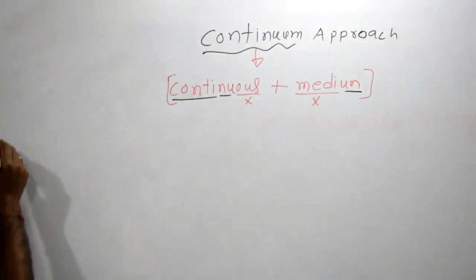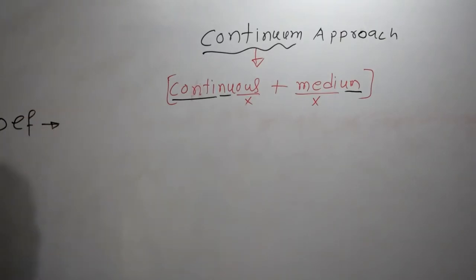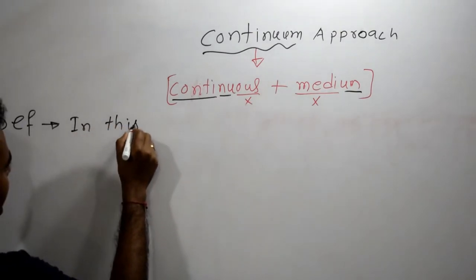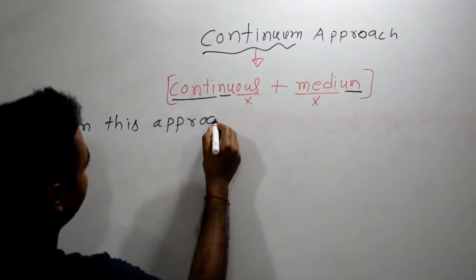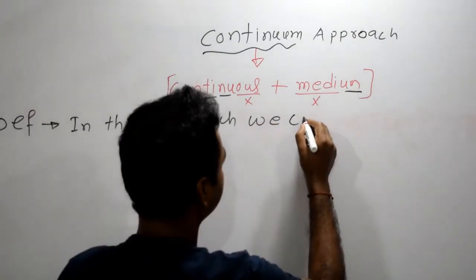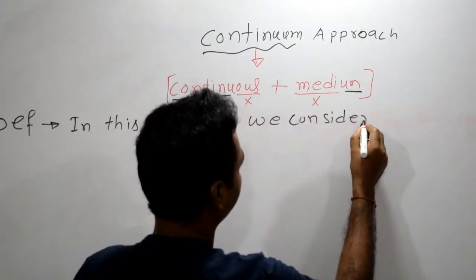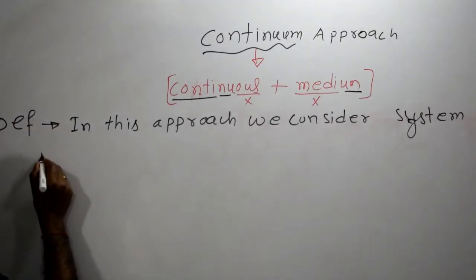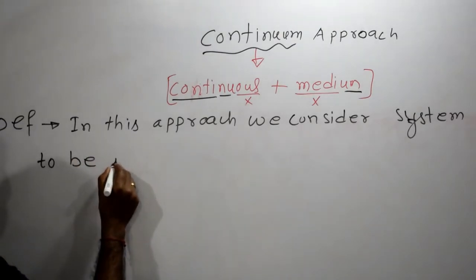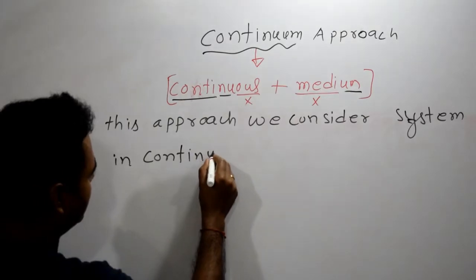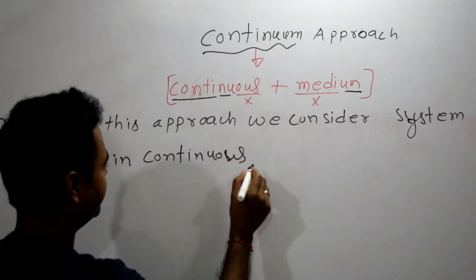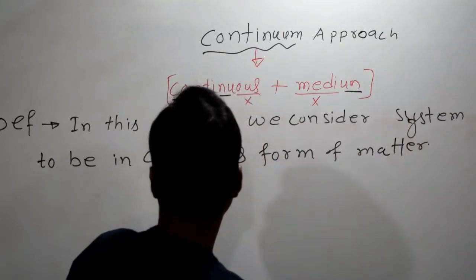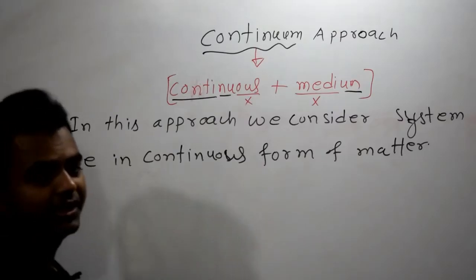Now why do we have 'continuous' and 'medium'? We'll understand this from its definition. In this approach, what we basically do is: we consider the system to be in continuous form of matter.